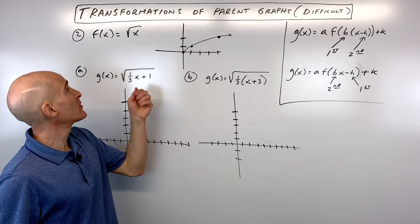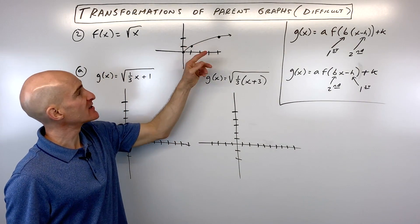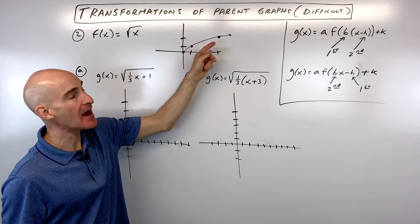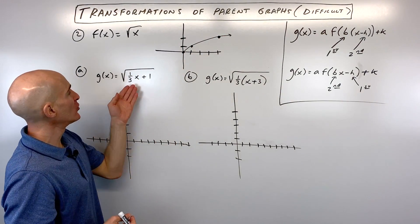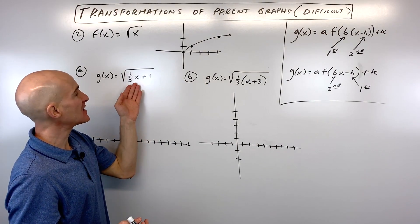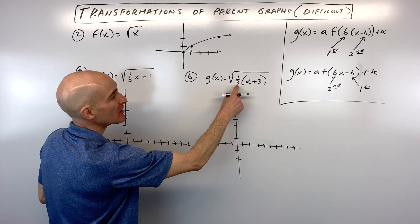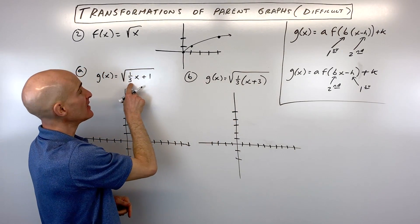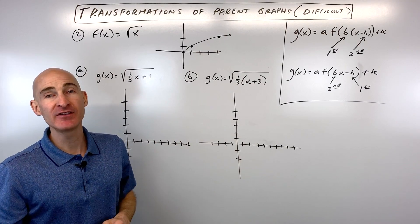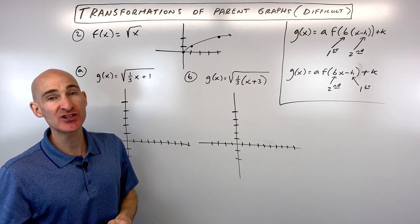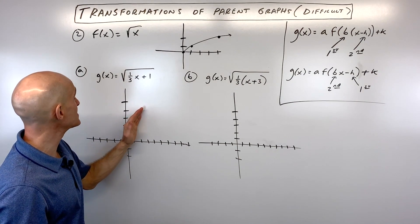Example 2 uses the square root function — a parabola on its side, just the top half. We'll compare two functions that again look identical: the square root of (1/3 x + 1) versus the square root of 1/3(x + 3). Distributing the 1/3 in the second gives 1/3 x + 1, the same as the first. But the process and order of transformations will be different for each.